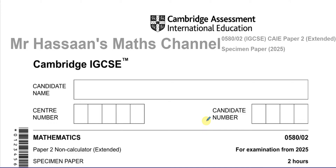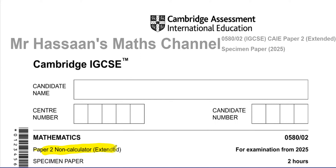This is the specimen paper that the examining board has released to give us an idea of the types of questions and the format of the exam. The format has changed quite fundamentally. Paper 2 is now a non-calculator paper, while Paper 2 and Paper 4 are still the extended versions, and Papers 1 and 3 are the core. Paper 2 is now short-answer questions with no calculator allowed, which is basically a game changer for many students.